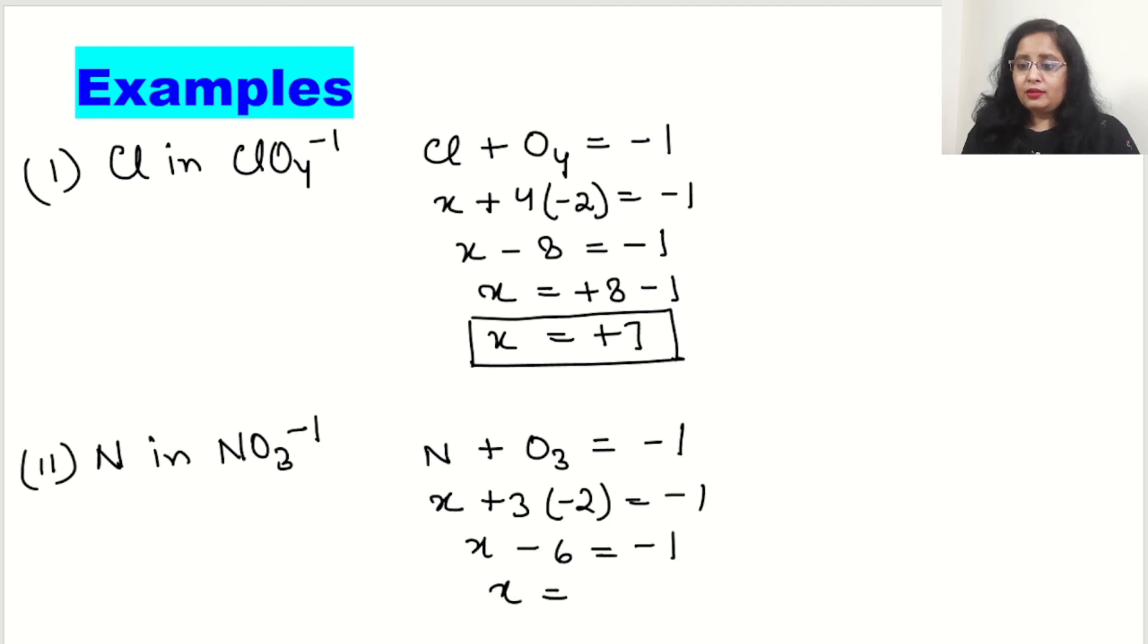So x will be plus 6 minus 1 and the value of x will be plus 5. And this plus 5 will be the oxidation state of nitrogen in NO3 minus 1.